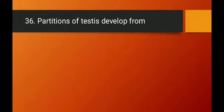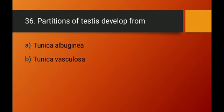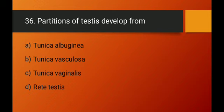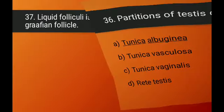Question number thirty-six: partitions of testes develop from which structure? The testicular lobules are developed because of the tunica albuginea, which sends partitions into the testicular tissue. Option A — tunica albuginea — is the right answer.